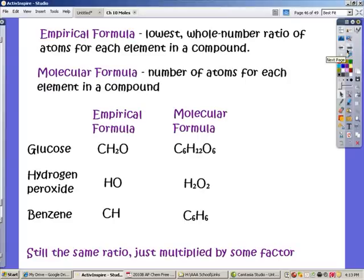Quick review here on empirical formulas. Empirical formula is the lowest whole number ratio of atoms for each element in a compound and molecular formula is the number of atoms for each element that's in the compound itself. I have some examples here.